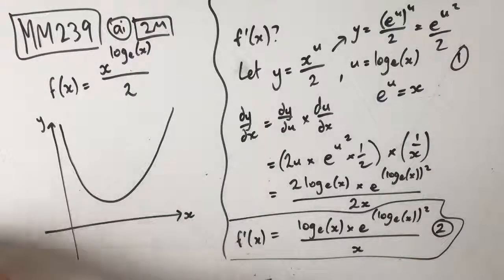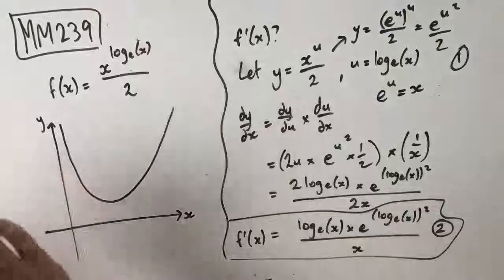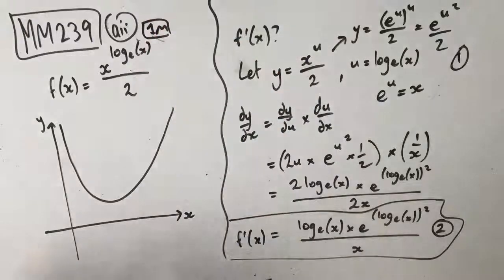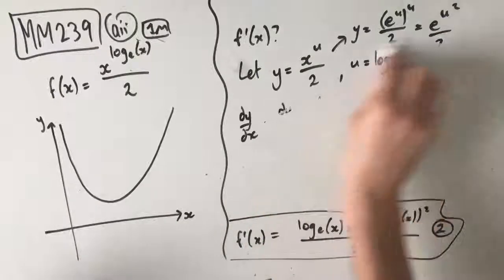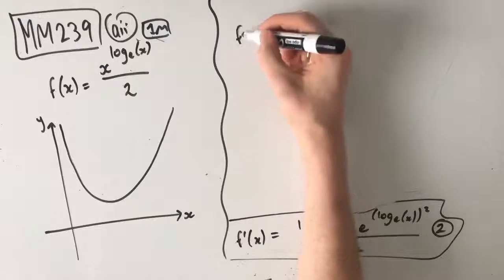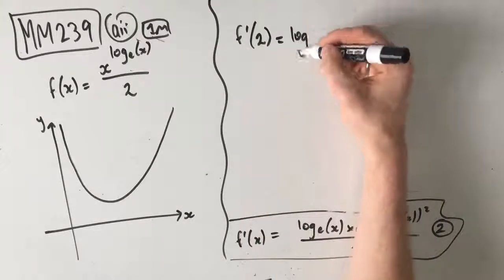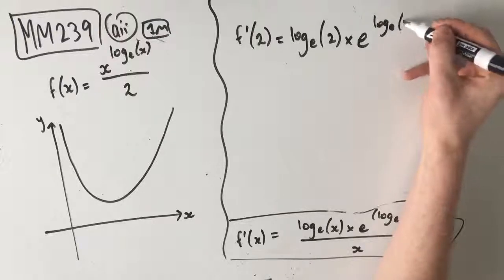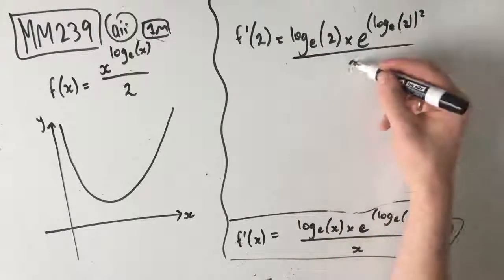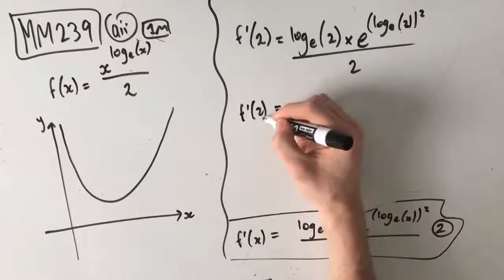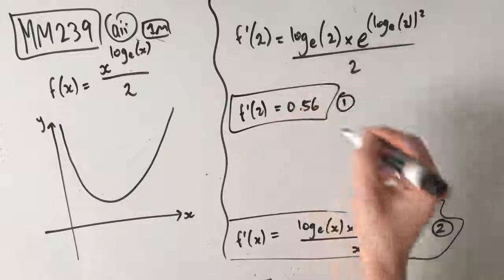Let's move on to part AII, where we've got a one-mark question. The question says: find the gradient of y equals f of x at x equals 2, correct to two decimal places. So we're searching for f dash of 2. What we end up getting is log e of 2 times e to the power of log e of 2 squared, all over 2. We simply put this into our CAS, and we get f dash of 2 equals 0.56. That's our first and only mark for this question.